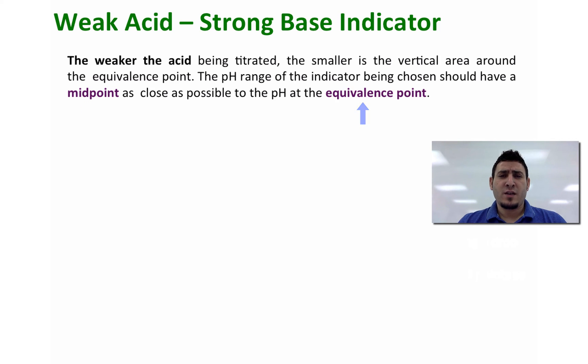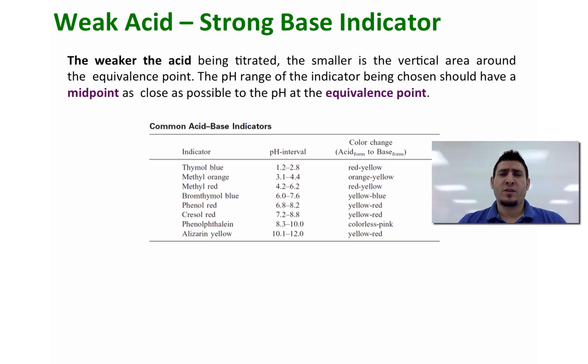And for that we have a wide range of indicators, but you have to watch for the pH interval. As you can see here, take for example bromothymol blue. It works when the pH of the equivalence point is between 6 and 7.6. It changes color from yellow to blue.